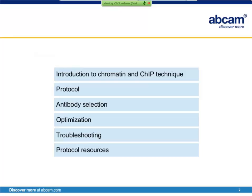The webinar will be split into a variety of topics. First of all, there will be an introduction to chromatin and ChIP with background information about the technique. I will then run through the protocol step-by-step. There will be more information about selecting an antibody to use in ChIP. I will then discuss optimization requirements with information on troubleshooting and how problems can be resolved, and in the final section, Miriam will give more information on protocol resources.